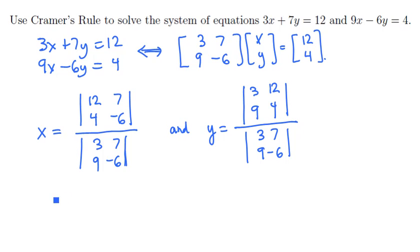Let's work these out now. We're going to see that x equals, across the top, 12 times minus 6, which is minus 72, minus 28. And along the bottom, negative 18 minus 63. So if we clean the numerator and denominator up, we have negative 100 over negative 81, which simplifies to x equals 100/81.